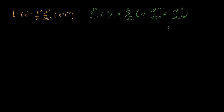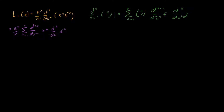Let's apply this to our definition of the Laguerre polynomial. We get that L_n of x equals e to the x over n factorial, times a sum from k equals 0 to n of the (n minus k)th derivative of x to the n, times the kth derivative of e to the minus x. If we can evaluate these two derivatives, we'll have a nice closed-form formula for this expression.